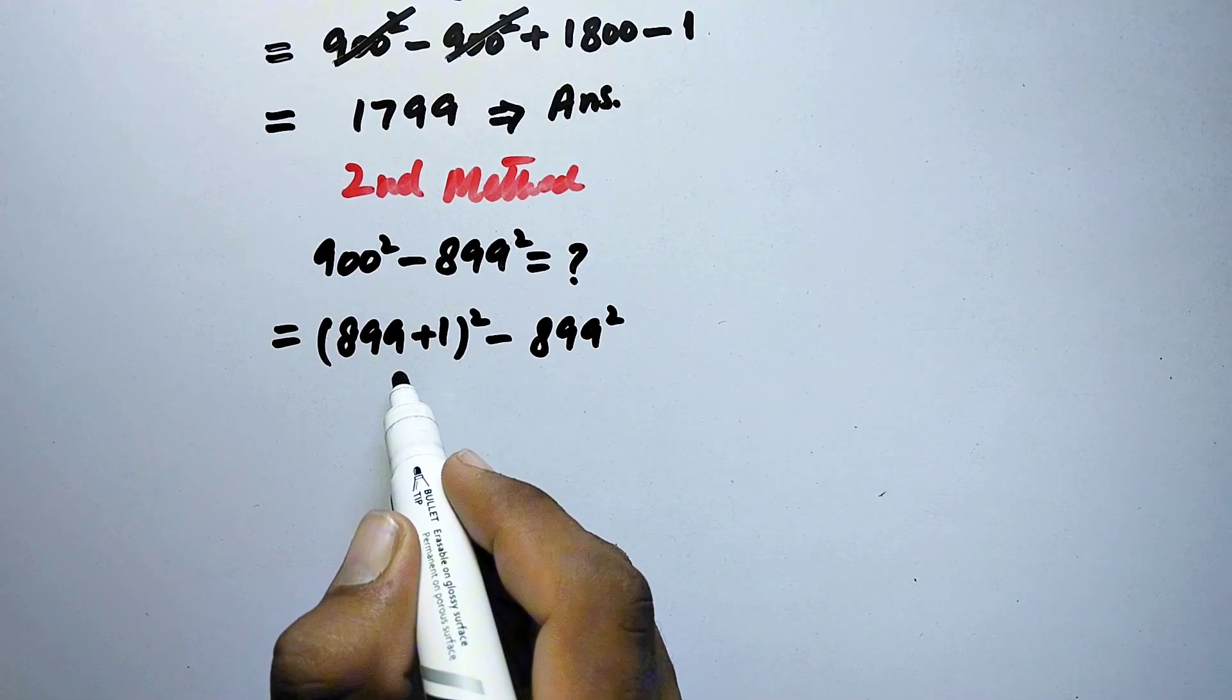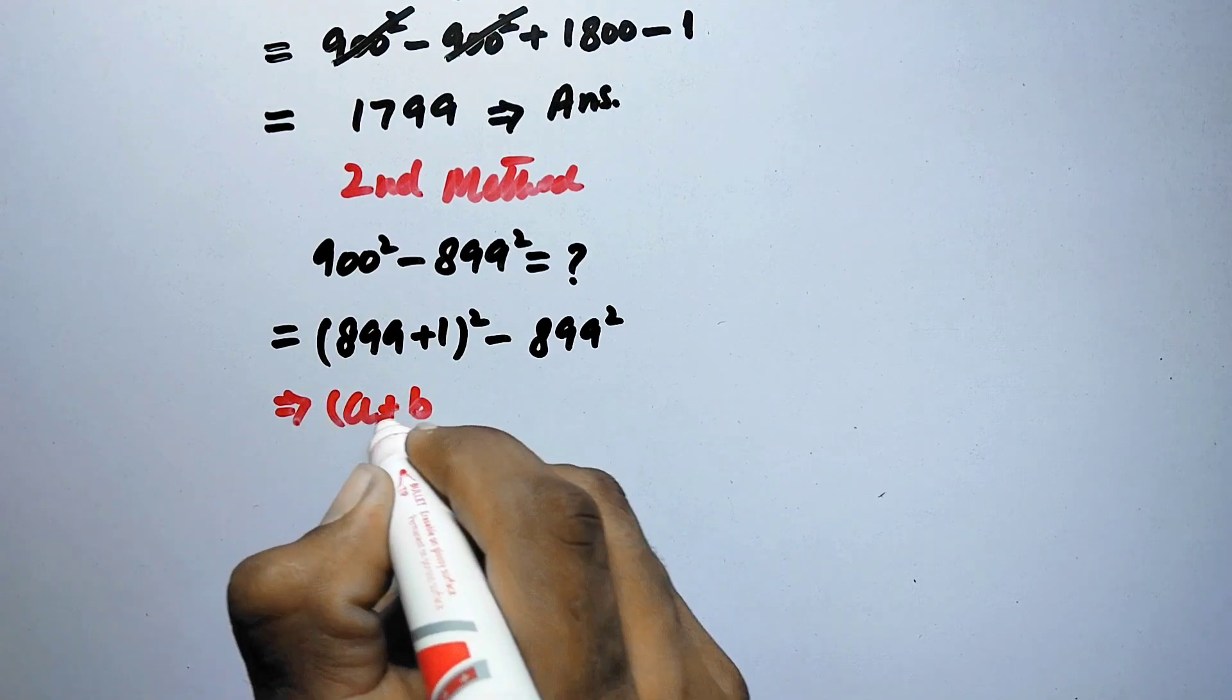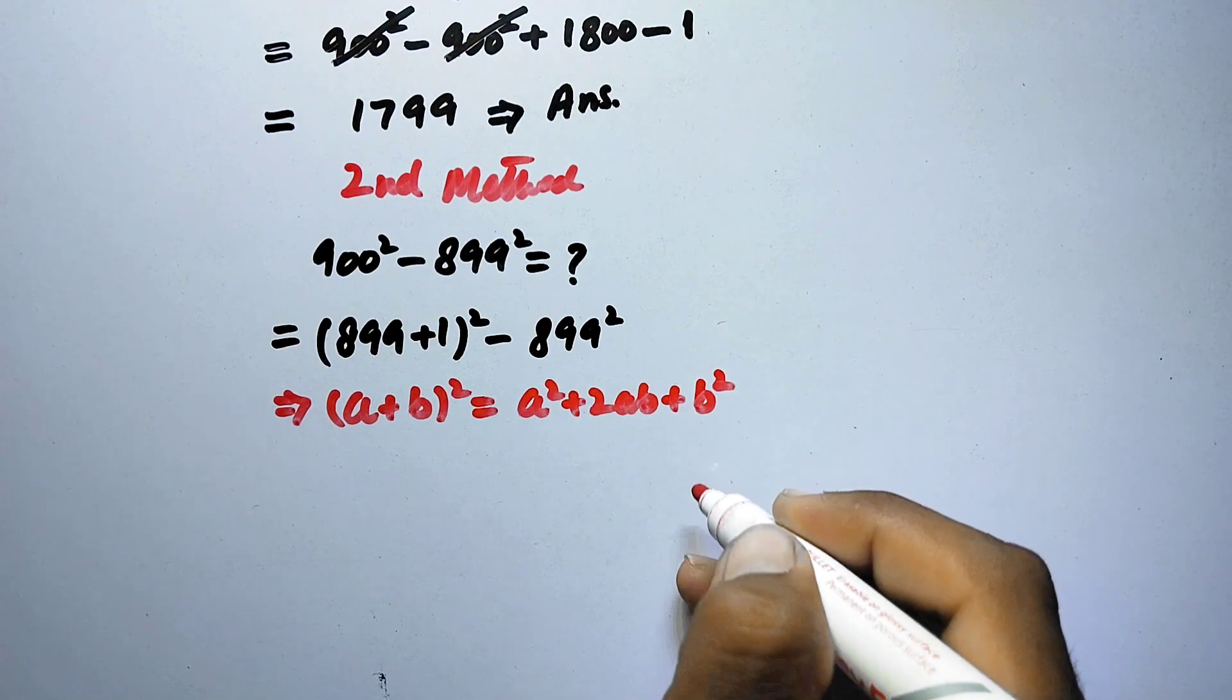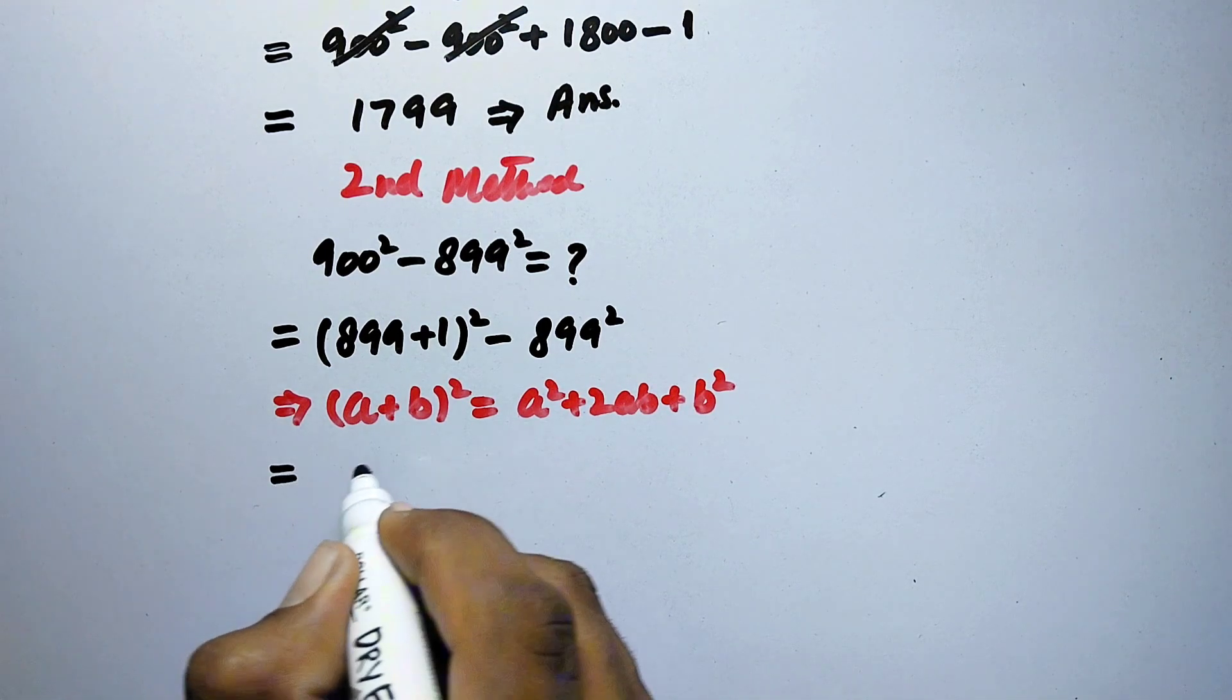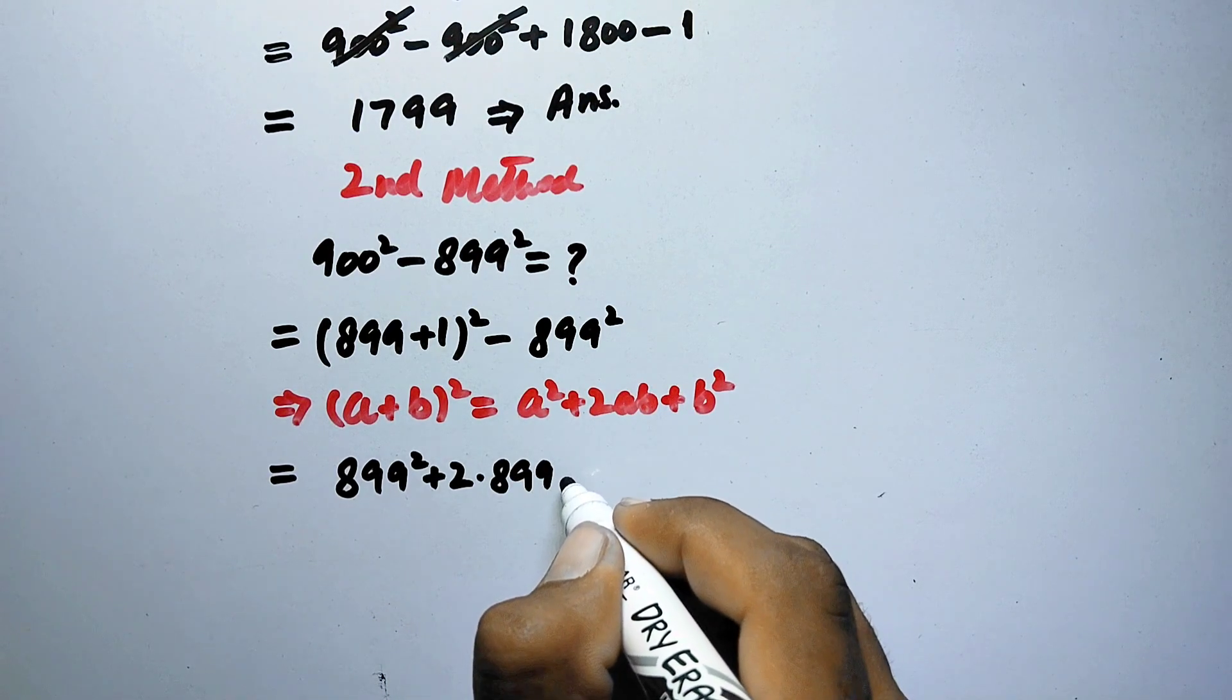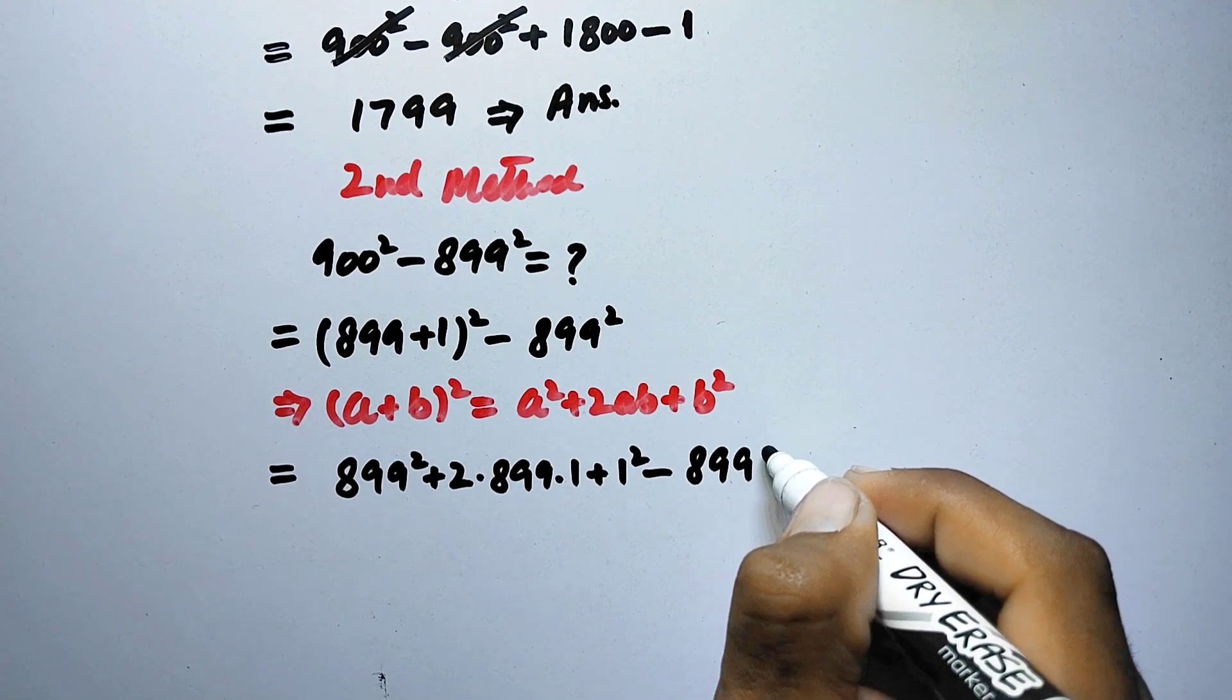So now here we can apply an algebraic identity: (a + b)² = a² + 2ab + b². Therefore this term can be written as 899² + 2 × 899 × 1 + 1² minus this 899².